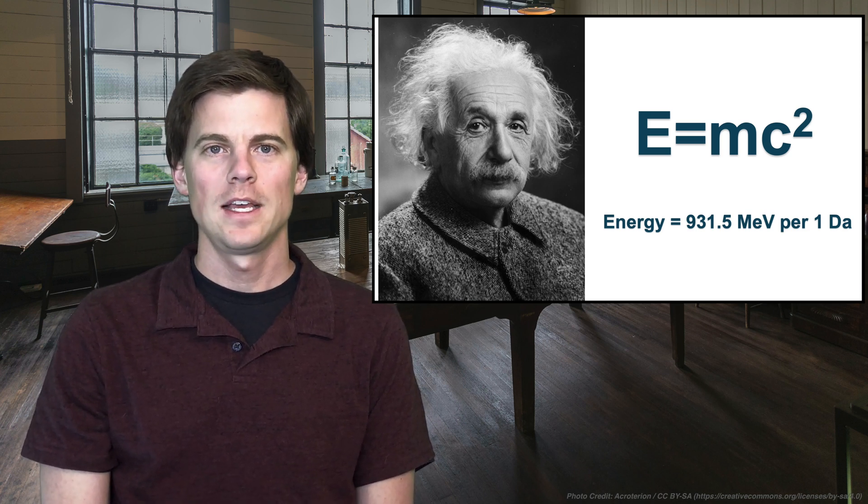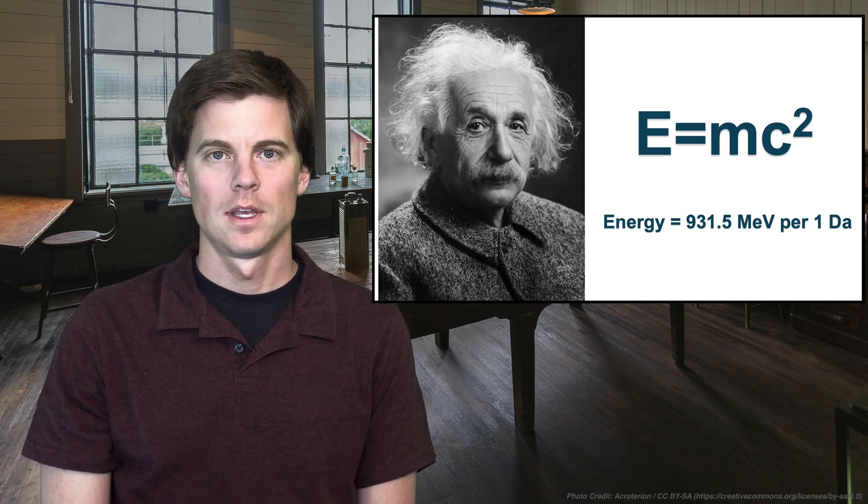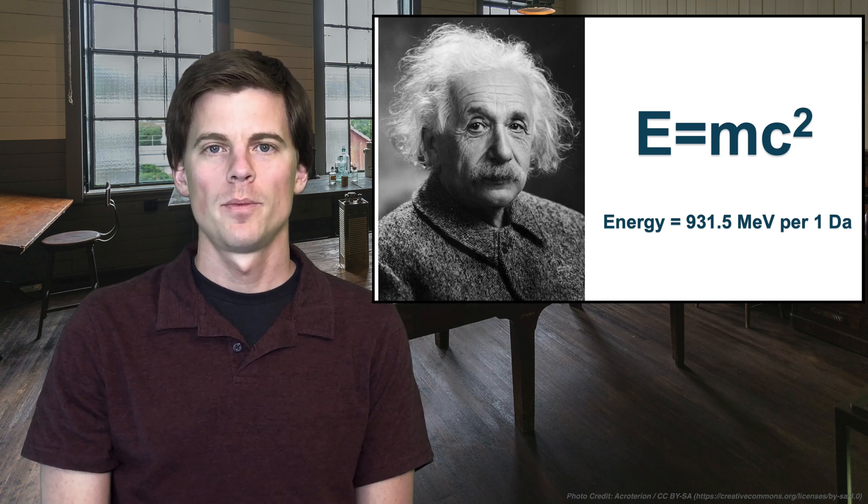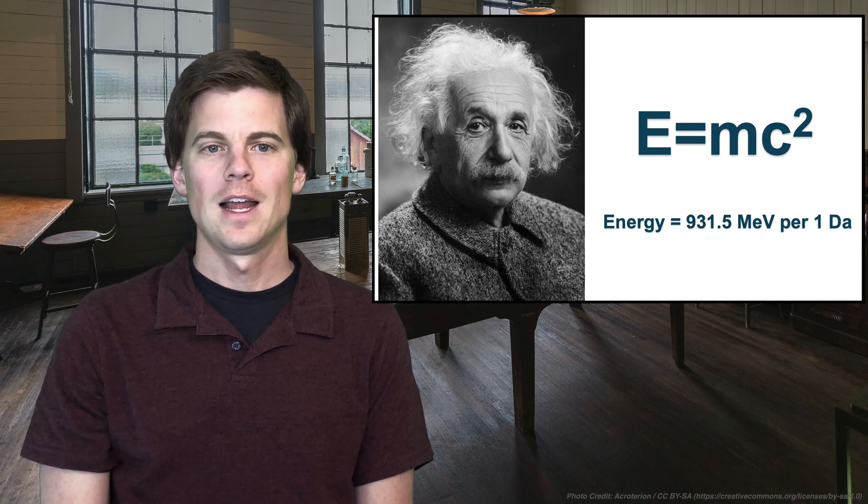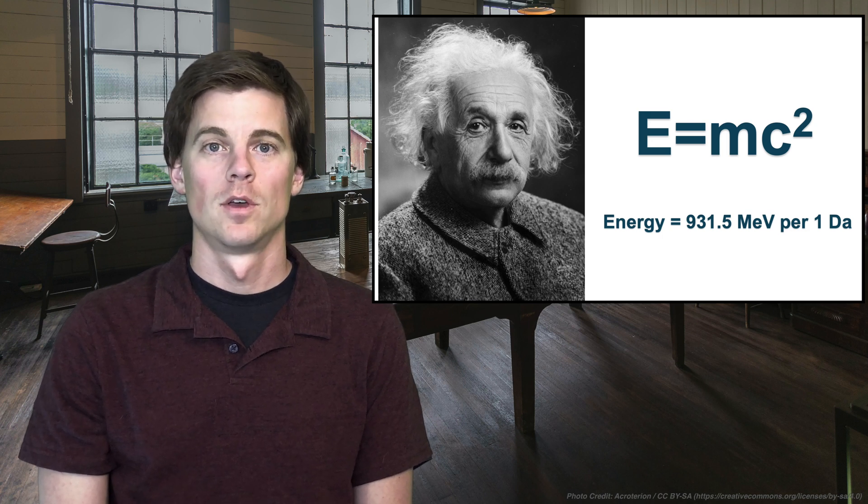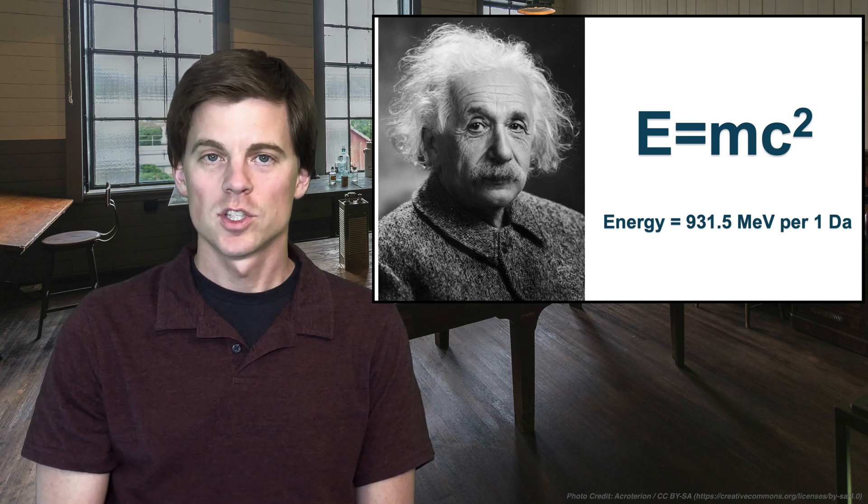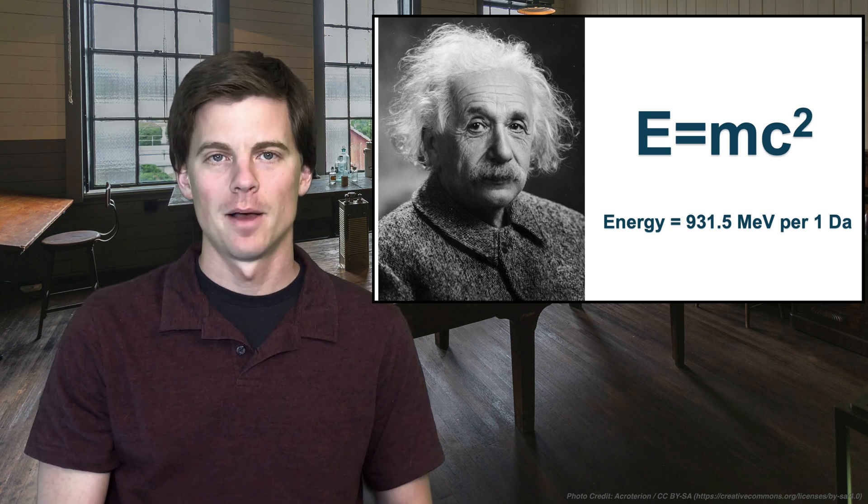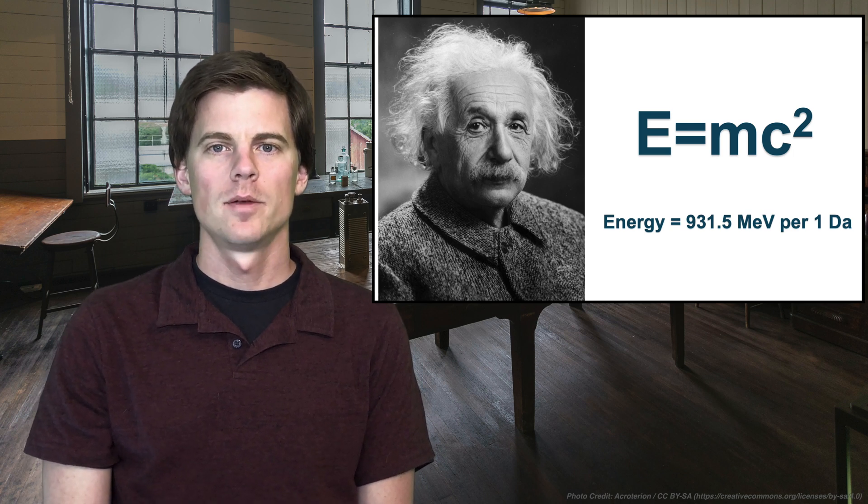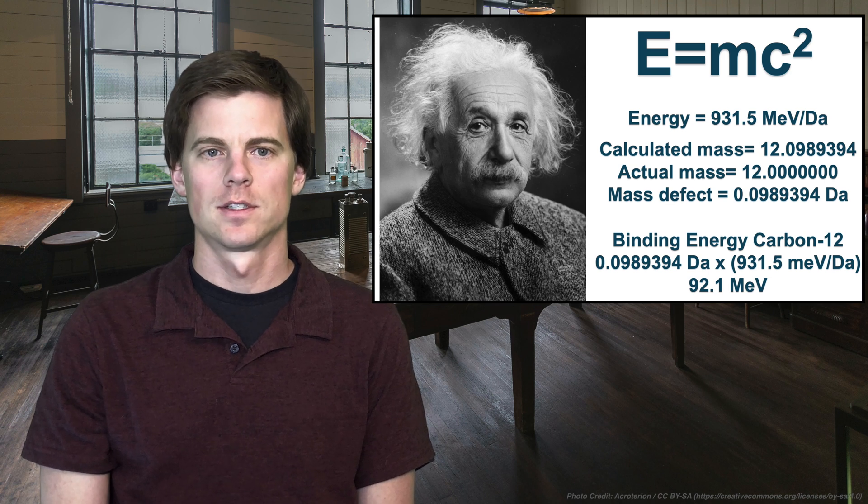So if you take his formula, and use one Dalton as the mass, and then use C, which is the speed of light, we come up with an energy of 931.5 mega electron volts per Dalton. So that means per Dalton of stuff we have has that much energy. This is a bit abstract to think about, but it comes into play very easily with what we were just discussing.